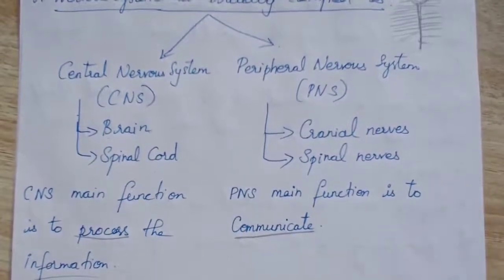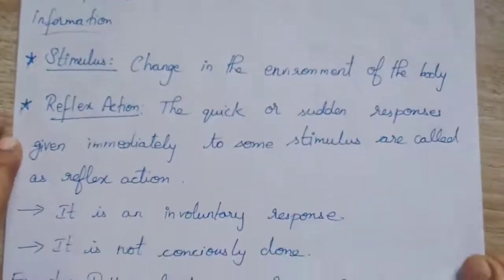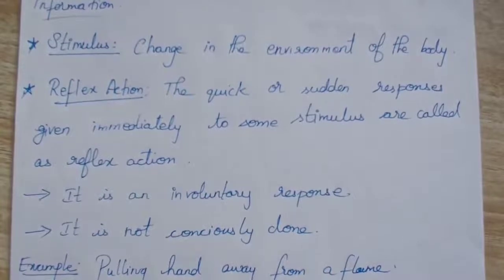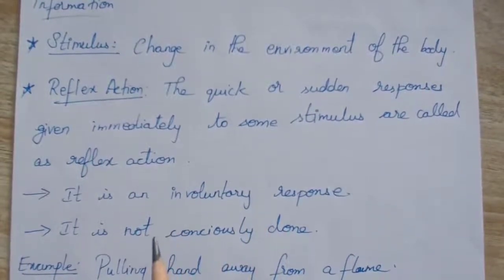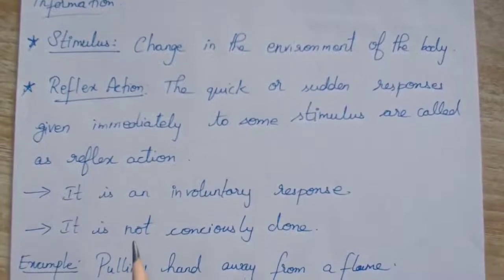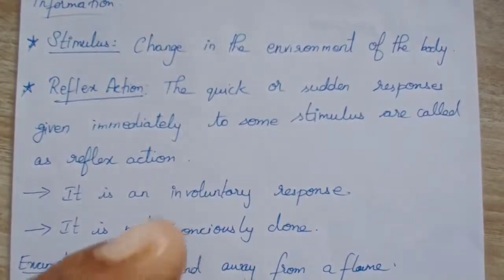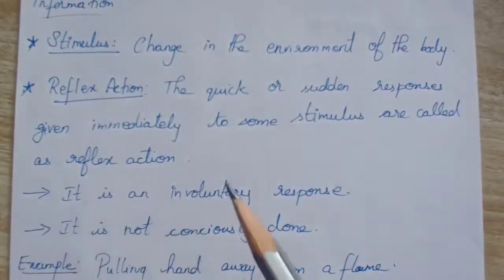A stimulus is a change in the environment of the body. For example, if I unknowingly touch a hot part, I will suddenly pull my hand away. I am responding to the stimulus. When I touch the hot part, the temperature of my finger changes suddenly — that sudden change is the stimulus, and I am responding to it.